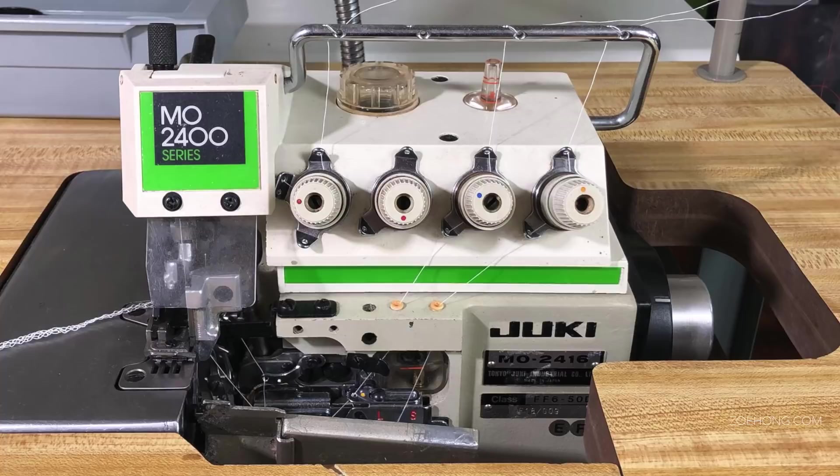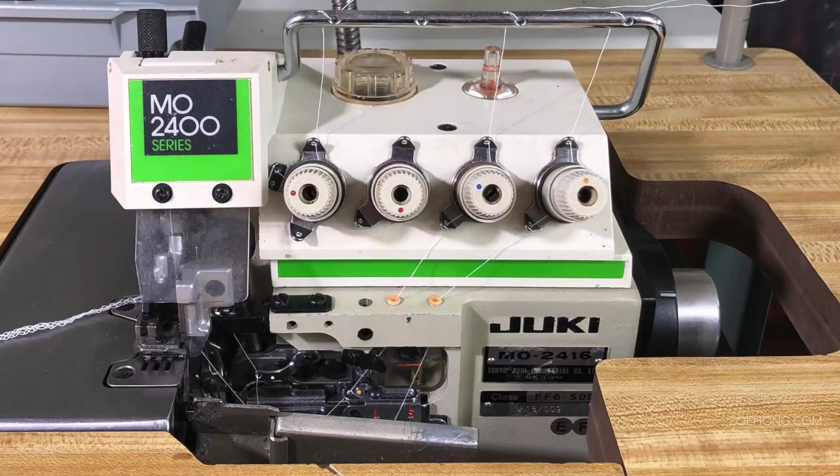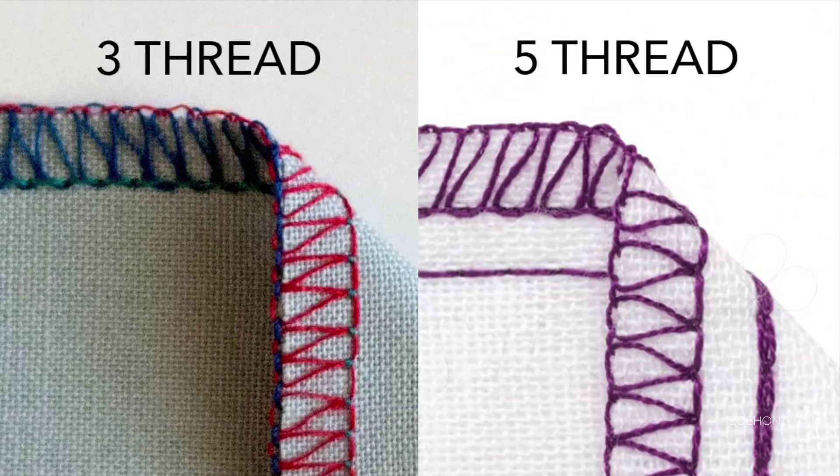This is a five thread overlock which means you have two options. You can thread three cones and get this wrap around stitching that wraps around the edge of the fabric.